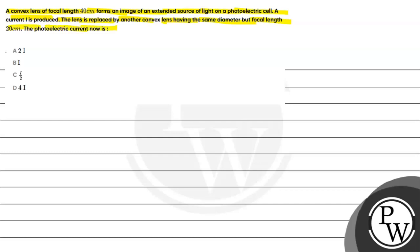The photoelectric current now is - here we have given four options. Now to answer this question, first we will discuss the key concept. The key concept is the energy of a photon, which is given as h times ν.